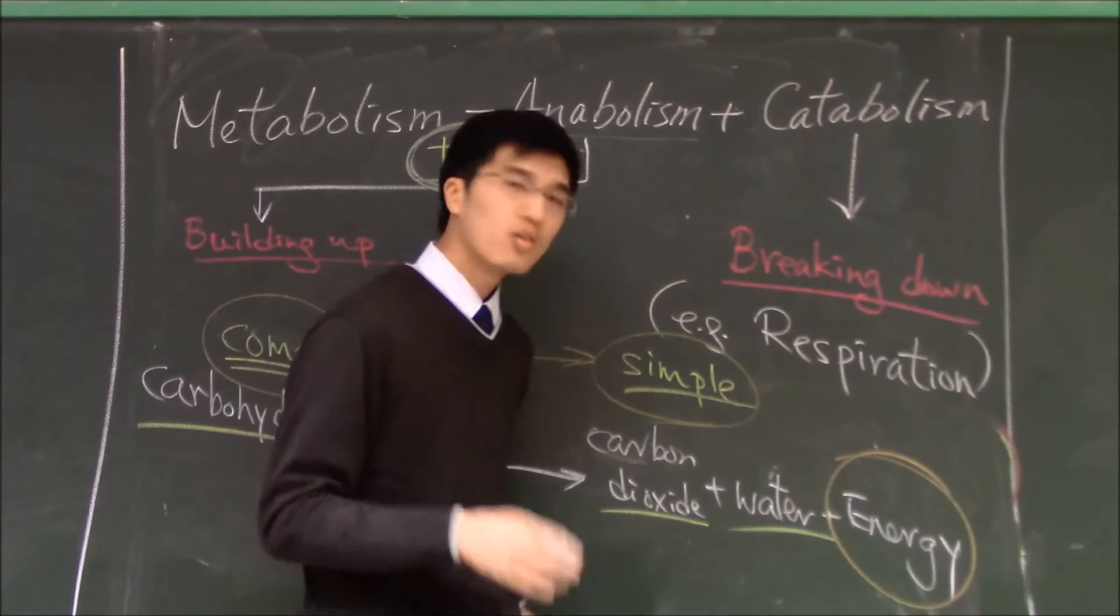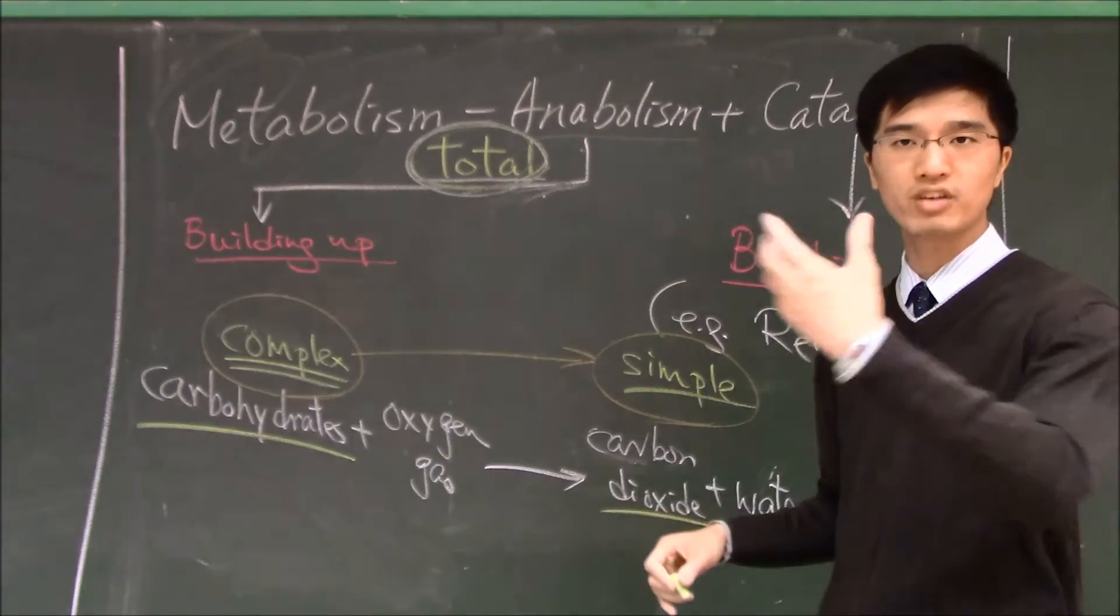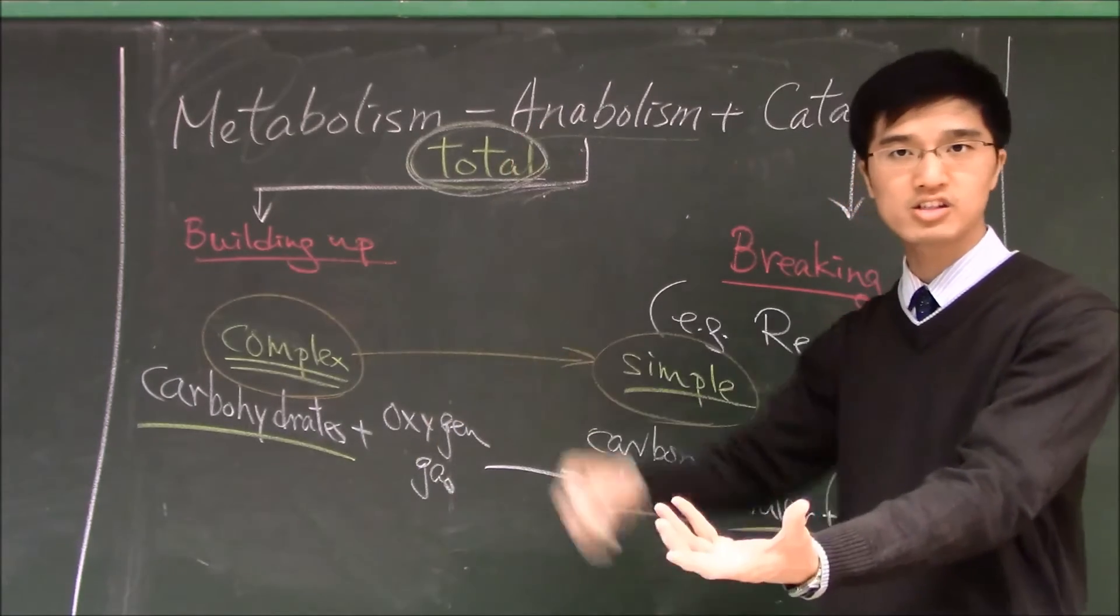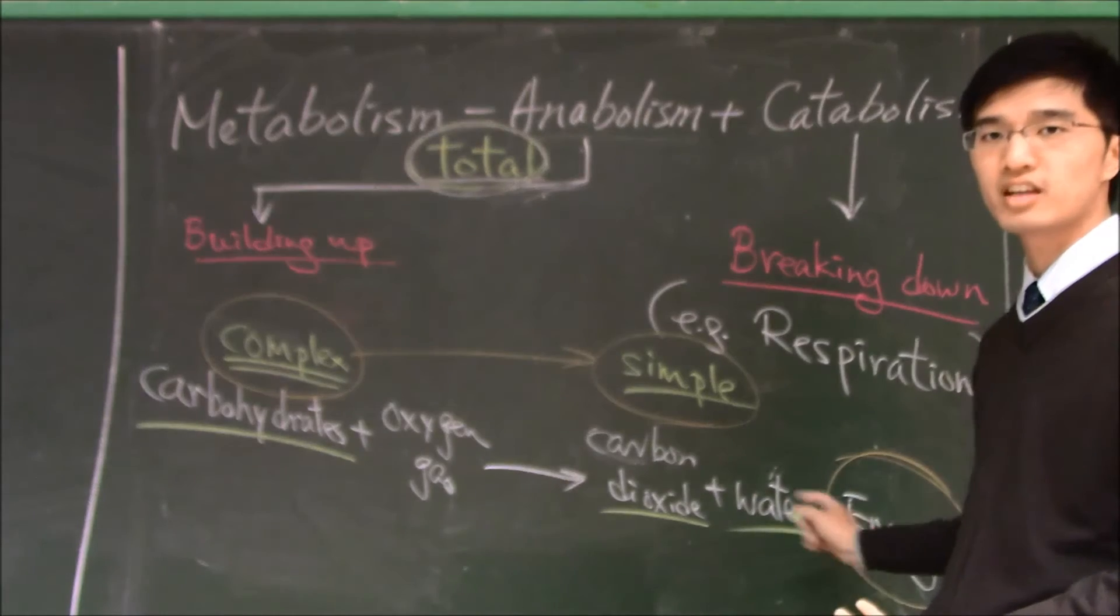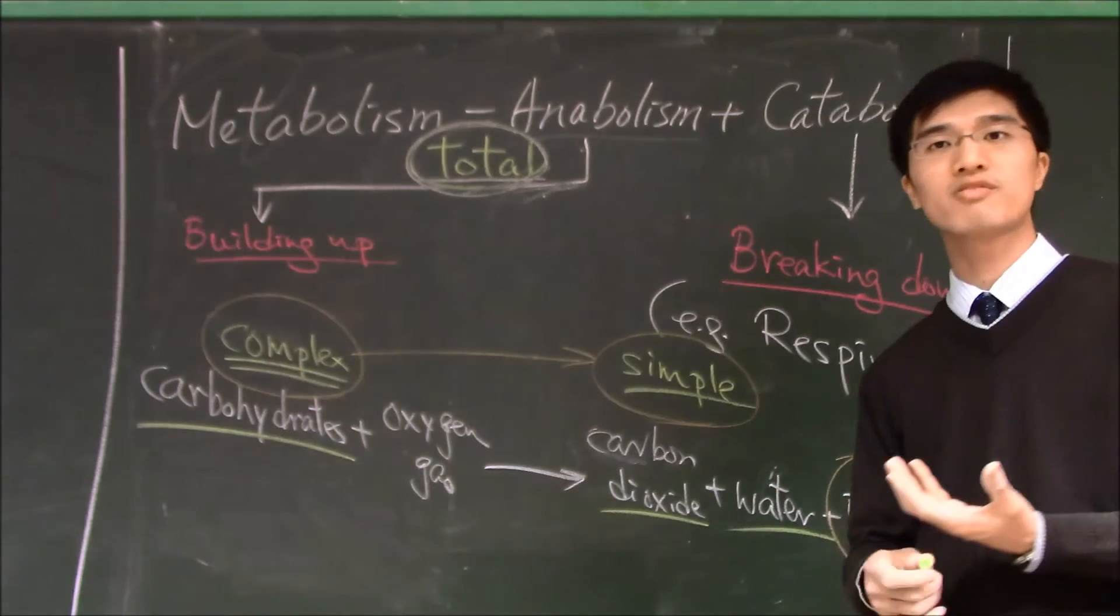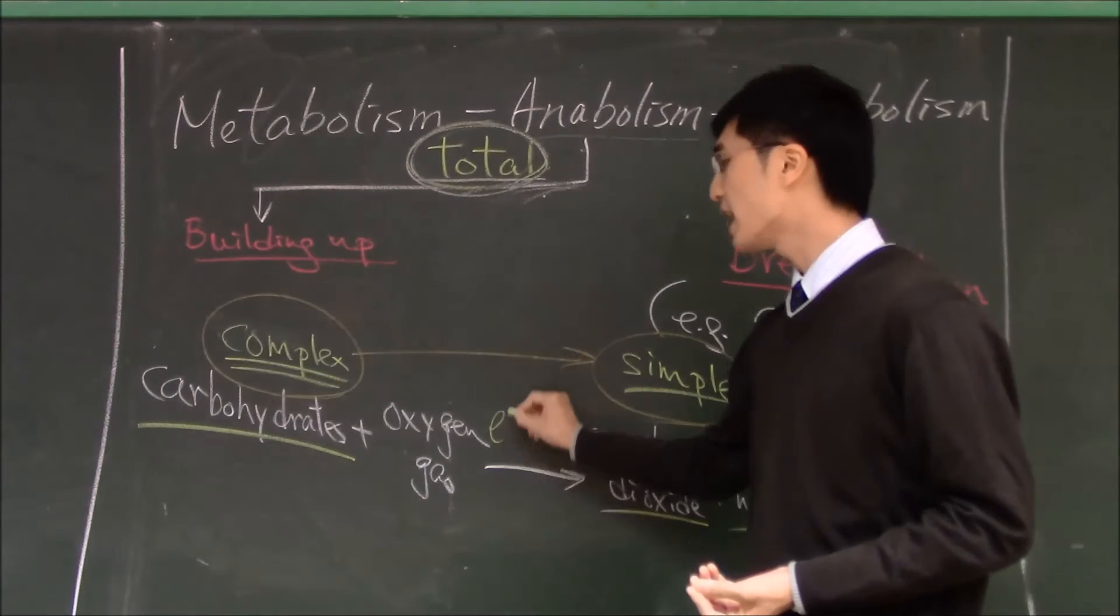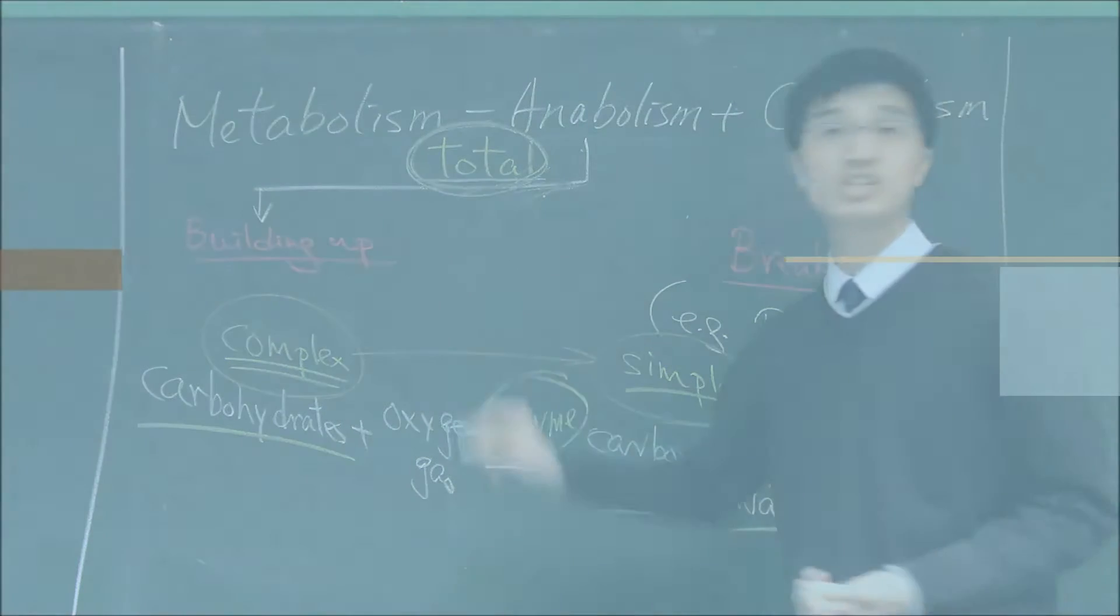But one last point I want to add is that even we have the whole equation, we have a bread, we have a bowl of rice and we have a tank of oxygen, we will not get carbon dioxide and water even energy because the equation is very, very slow. So what we need to introduce is enzyme, the main topic of this chapter.